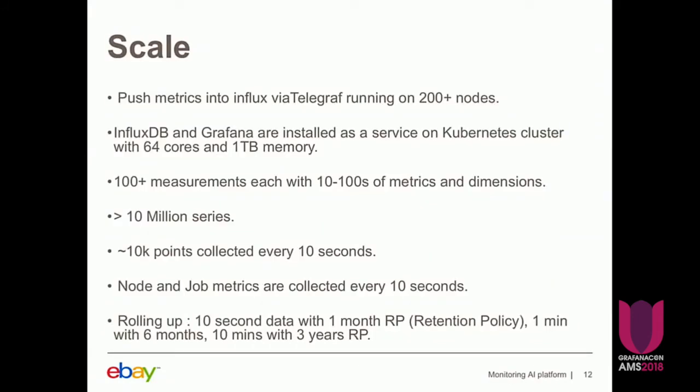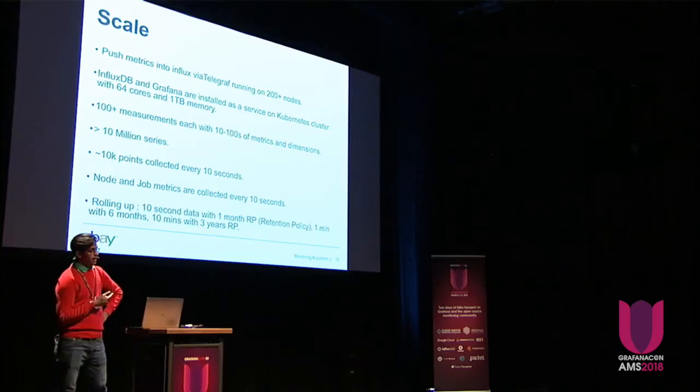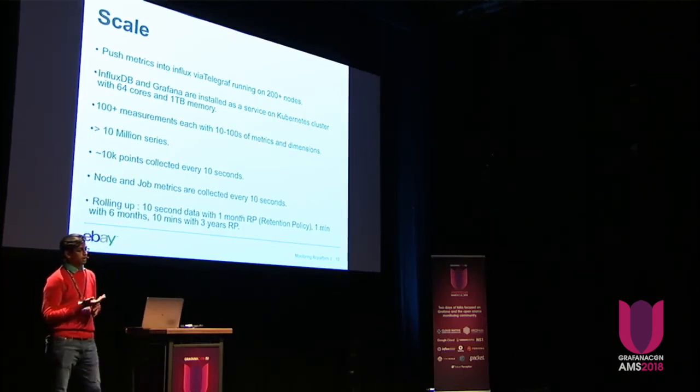Here's a high-level overview of how the scale looks. We use InfluxDB as a time series database. We have more than 200-plus nodes, and we use Telegraf to collect all those metrics — system-level and job-level — and push them to InfluxDB. We run InfluxDB and Grafana on Kubernetes clusters with around 64 cores and one terabyte of memory each. We have more than 100-plus measurements, each with hundreds of metrics and quite a few dimensions. We've already reached 10 million series, and we ingest around 10,000 points every 10 seconds into a single-node InfluxDB instance.